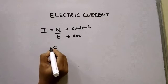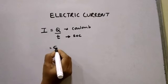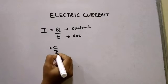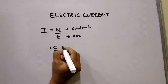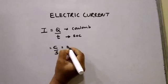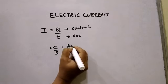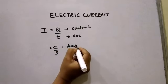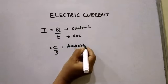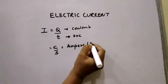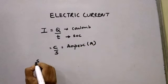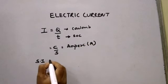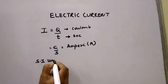Current will be equal to coulomb upon second, and coulomb per second is nothing but ampere — A-M-P-E-R-E — denoted by capital A. The SI unit of electric current is ampere.